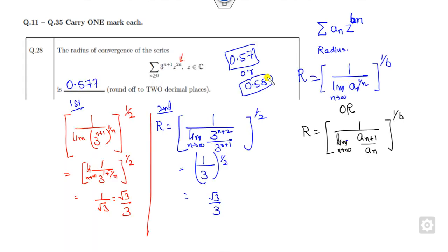Remember this shortcut: whenever the series involves z^(2n) or z^(bn) — where b can be positive or negative — you can apply this formula directly for the radius of convergence.